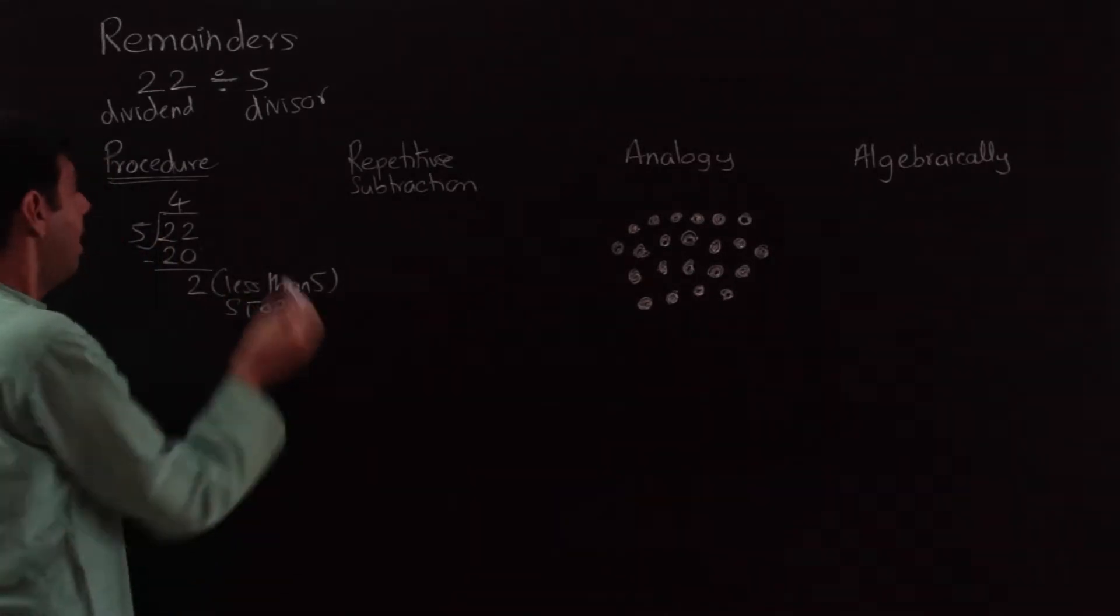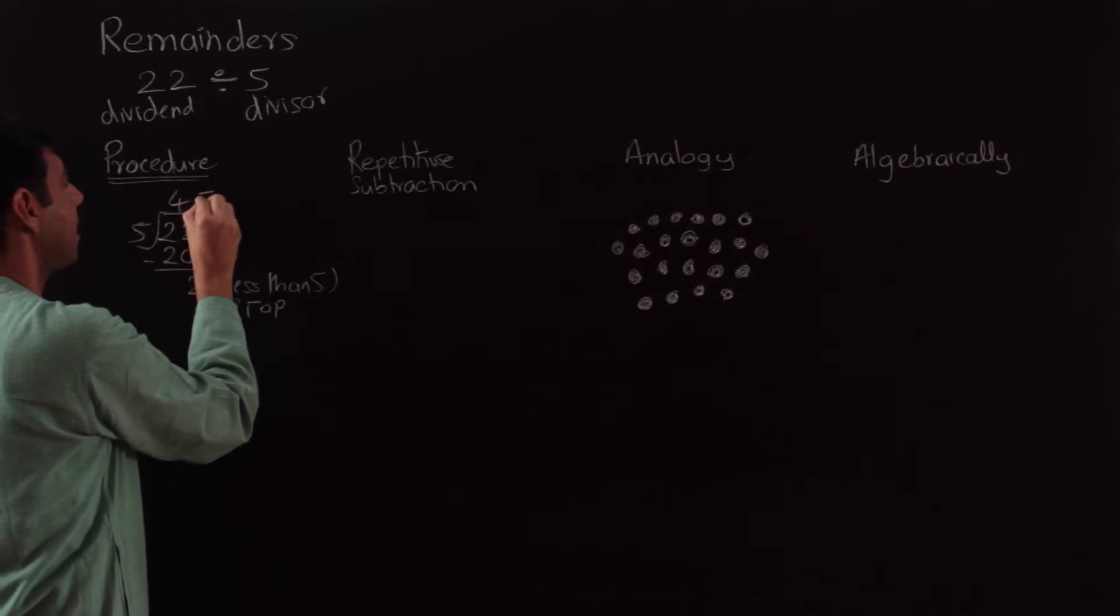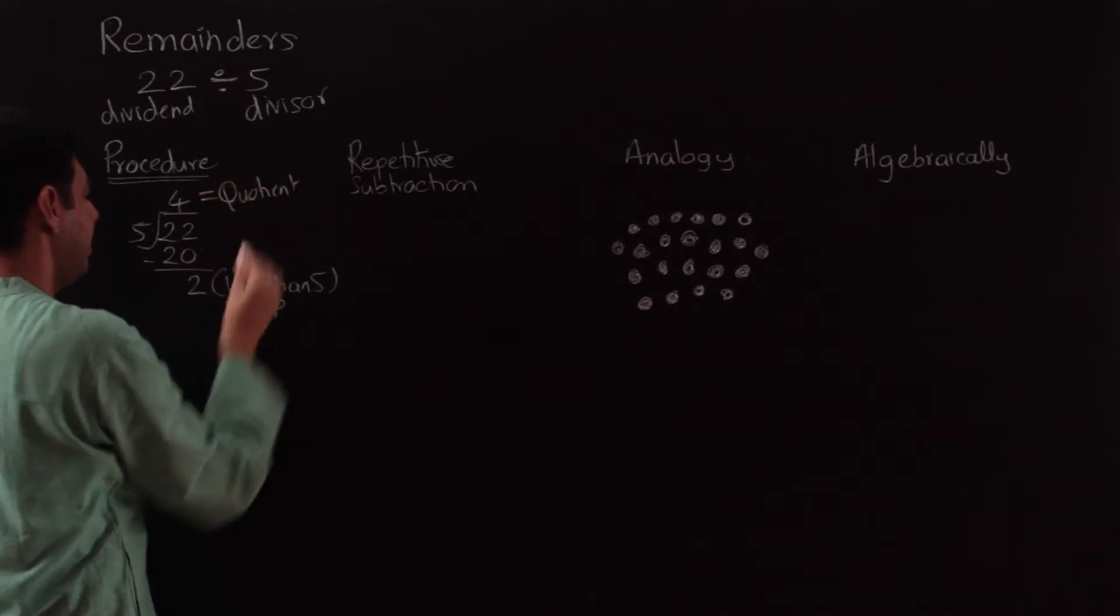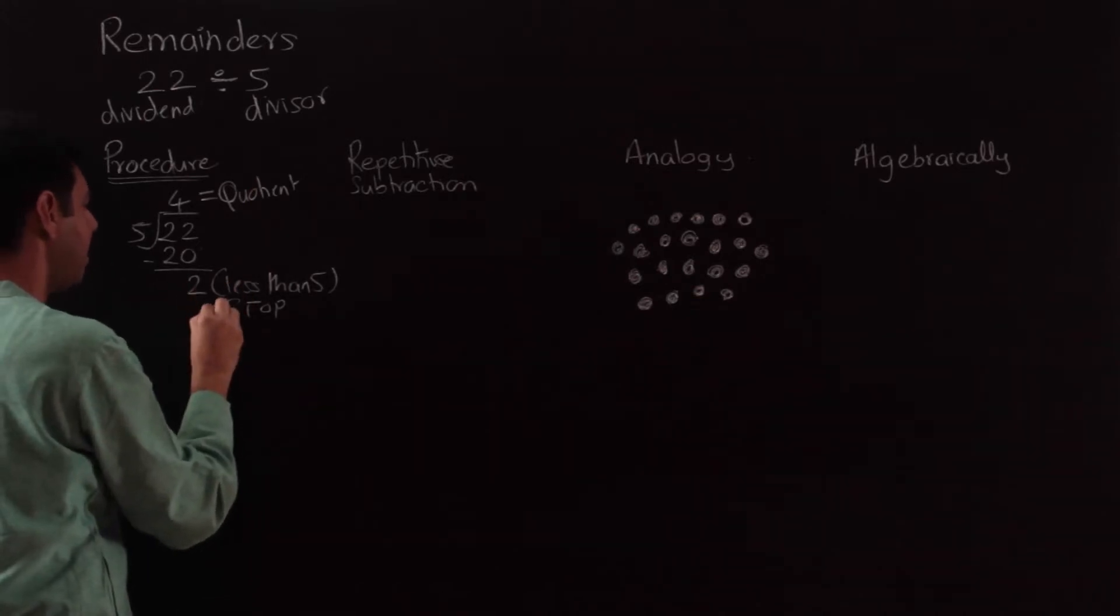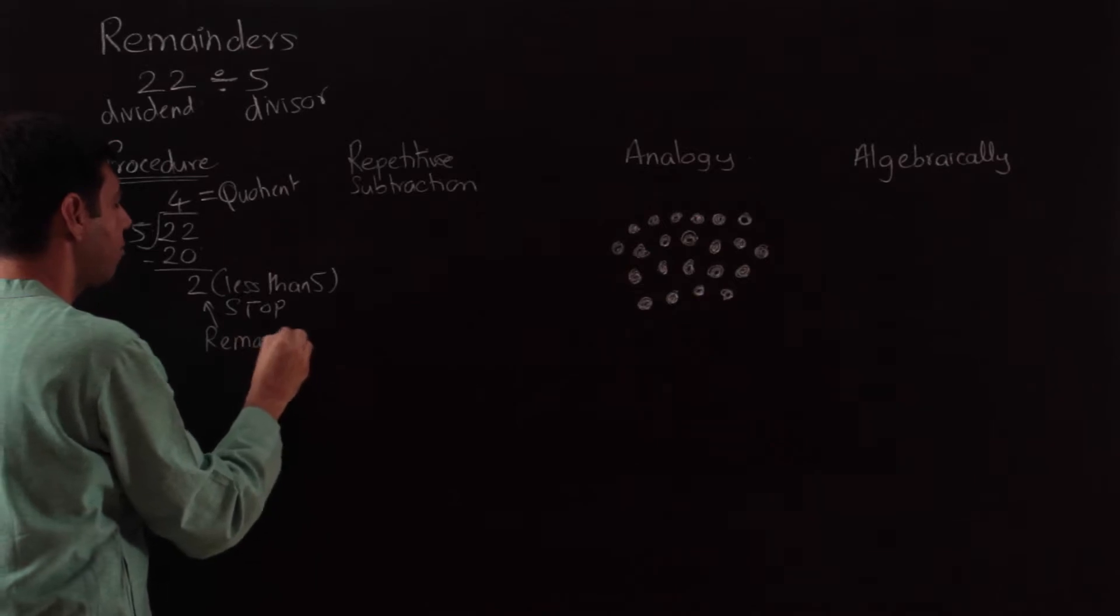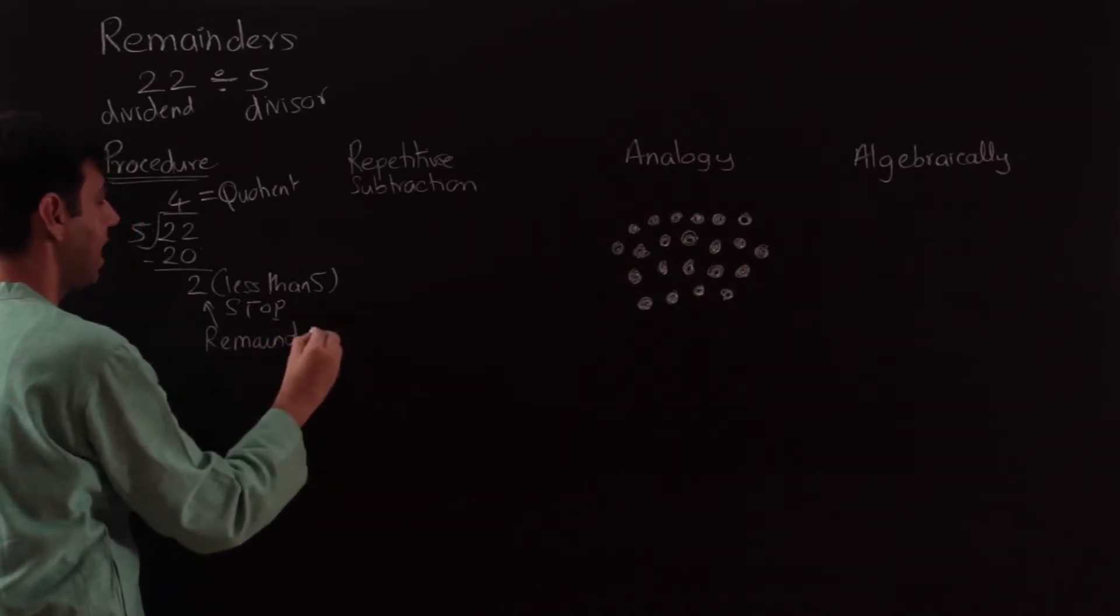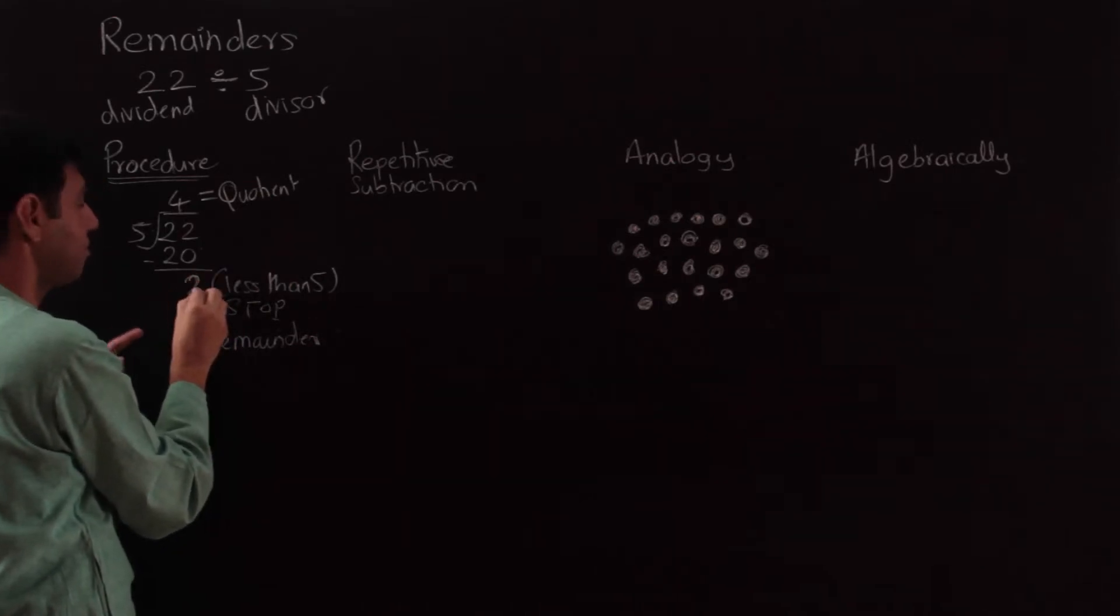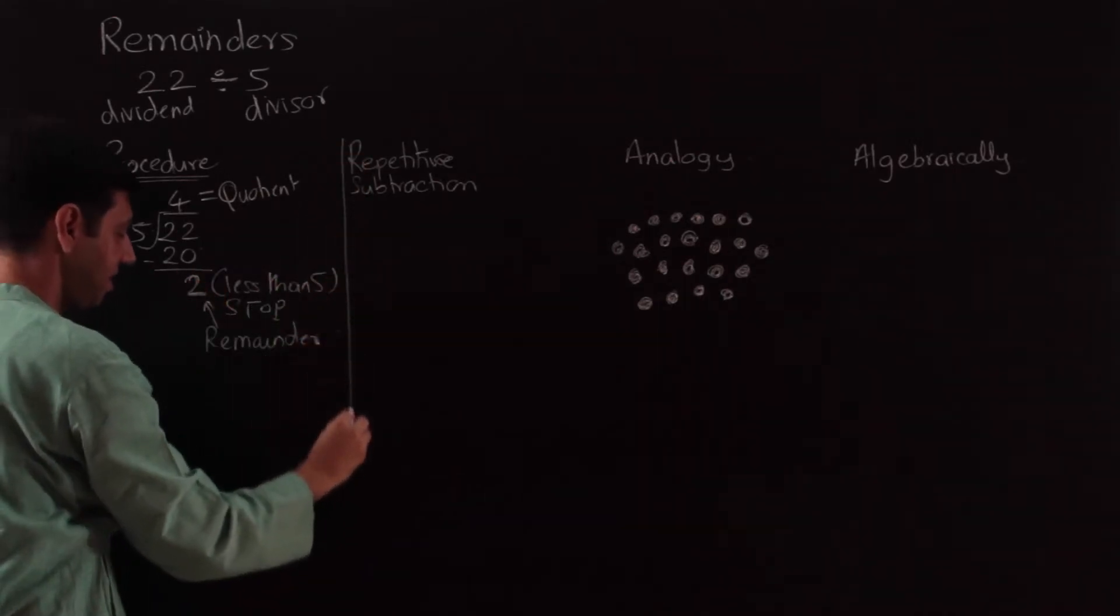This 4 is the quotient and this 2 is my remainder. In our questions we're going to focus on finding the remainder, so I'm not very interested in the quotient per se but the remainder, which is 2 in this case. We're going to learn division through different ways. This was the procedure.